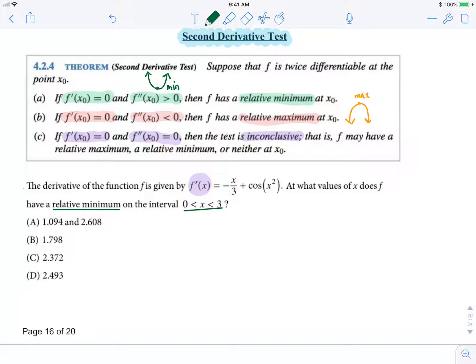0 to 3. So we know a relative minimum occurs when f prime of x changes from negative to positive, because that means my function would be going from decreasing to increasing. Wherever that happens, it's a minimum.